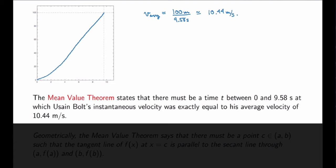What does the mean value theorem have to say about Usain Bolt's race? In this context, the mean value theorem states that there must be a time t between 0 and 9.58 seconds at which Usain Bolt's instantaneous velocity was exactly equal to his average velocity. That makes sense physically: he started at rest with initial velocity zero, so for a time he was going slower than his average velocity while accelerating, and then at a certain point he must have gone faster. So the mean value theorem states there is a time t where he was going at exactly his average velocity.